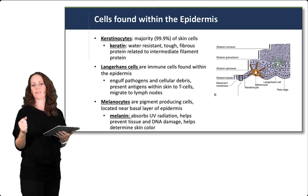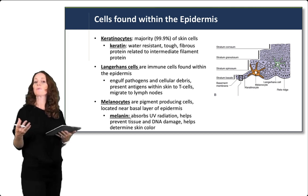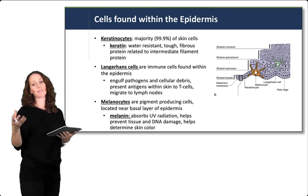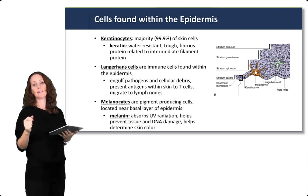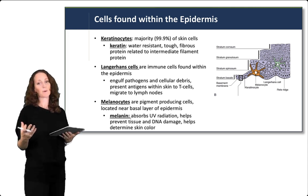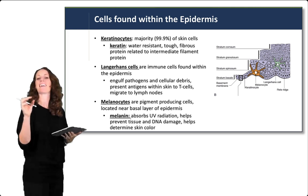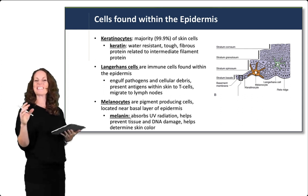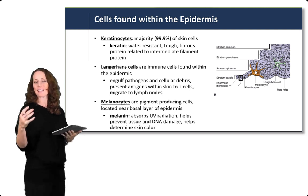There are three main cell types found within the epidermis. Keratinocytes are the majority — 99% of skin cells. These are the epithelial cells forming the stratified squamous layer, filled with keratin especially in the higher layers. Keratin is a water-resistant, tough, fibrous protein related to intermediate filament protein. Your fingernails are also composed of keratin. Evolutionarily, this is related to the scales of scaly animals — our skin, nails, and hair are all related to that keratin protein.